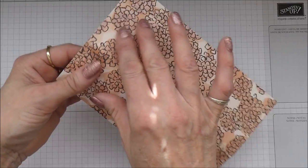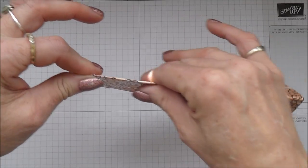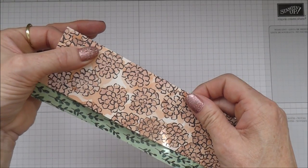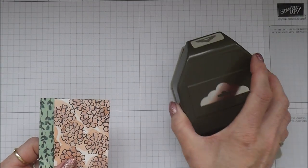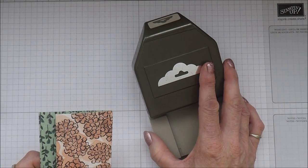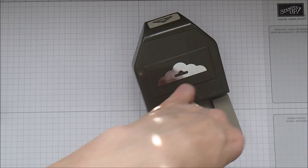So now what you need to do is fold along that score line there. And you'll note I'm not using a bone folder because I don't want to crack this paper. So now it's at this point I'm going to bring in my scallop tag topper punch.